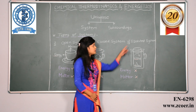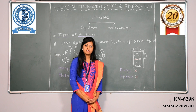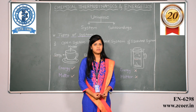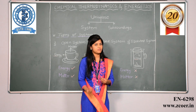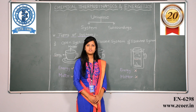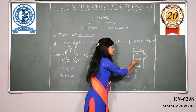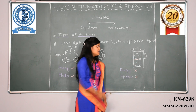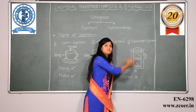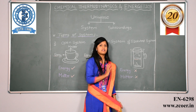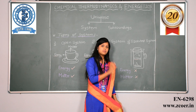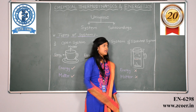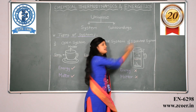The third type is an isolated system. An isolated system is one wherein neither matter nor energy can be exchanged with the surrounding. An example is a thermos. If we keep tea in the thermos, the thermos will maintain the heat energy as it is — it will keep the tea hot. The energy is not going to be dissipated to the surrounding. This kind of system is called an isolated system.